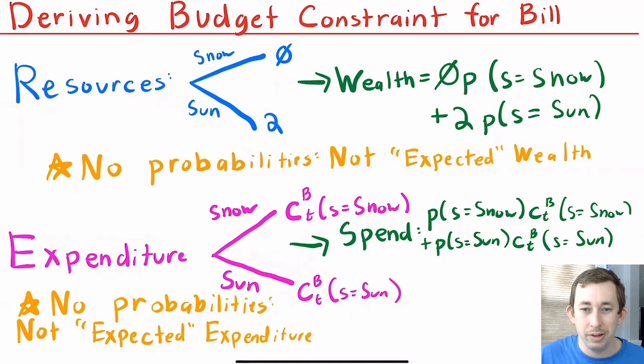Notice that there are no probabilities in this wealth, right? There is no such thing as like a probabilistic budget. You don't walk into a grocery store probably having $0 or probably having $2. You either have $0 or $2.